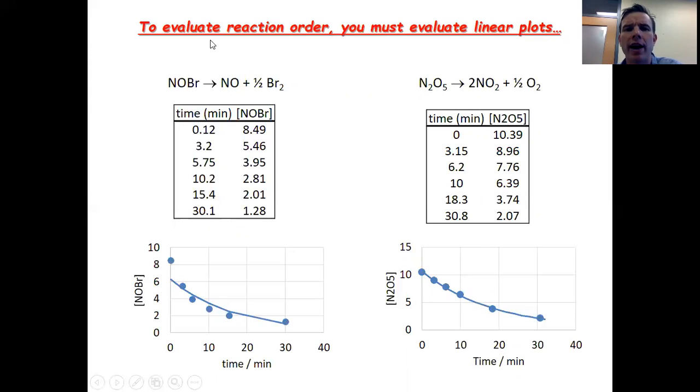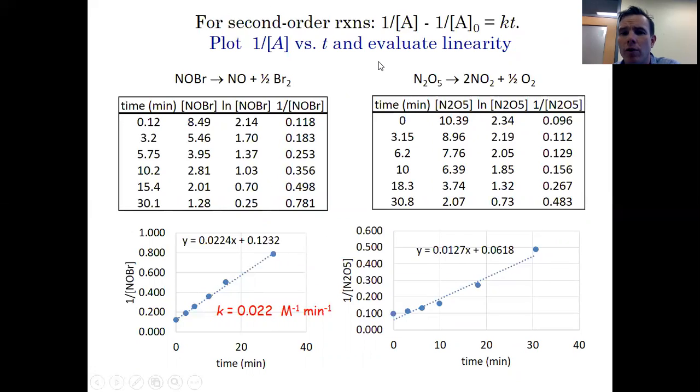And I want to make a couple points to you about this. Again, in order to evaluate reaction orders, you must evaluate linear plots. So here's that same data set. They both look kind of curvy. Maybe it's first-order. Maybe it's second-order. Who really knows? For a second-order reaction, in order to evaluate linearity, what you are going to plot is 1 over A versus T. So again, you can calculate those things for these two different reactions. You can plot things. And what you can see is that this is very, very, very clearly a straight line, whereas this one has curvature. This is not a second-order reaction. This one is. And again, evaluating the slope, rise over run, you get k 0.022 per molar per minute. Which is exactly what you would expect.